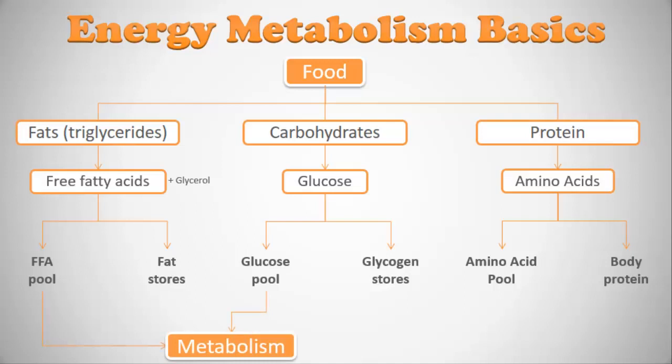In terms of metabolism, our body uses free fatty acids from the free fatty acid pool, glucose from the glucose pool, and amino acids from the amino acid pool — though amino acids don't contribute much to metabolism. We can move from fat stores to the free fatty acid pool through lipolysis (lysis means breaking down), and we can move back through lipogenesis. We can also create fat stores from glucose through lipogenesis.